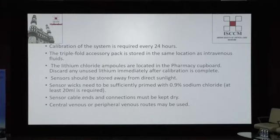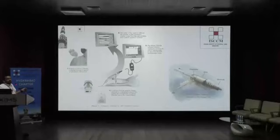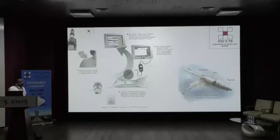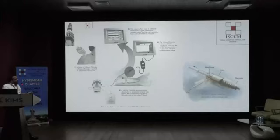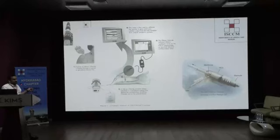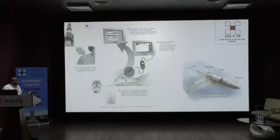In LITCO, either a central or peripheral line is used to inject a known concentration of lithium chloride solution. The arterial end has a transducer with a sensor containing a wick that measures lithium concentration, connected via an electrode to the monitor. This produces a lithium dilution graph — compared to a thermal dilution graph in PICO. The same principles apply: mean transit time and downward slope time are used to calculate cardiac output. The principle is the same; only the indicator differs — lithium concentration instead of temperature.